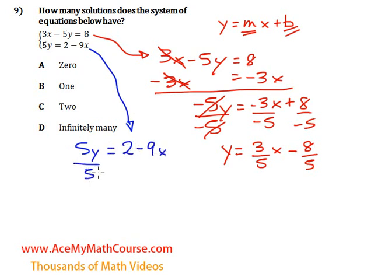So now we can just divide both sides by 5. So y equals, now I'll put the x actually in front of the 2 over 5. So we get negative 9 over 5x plus 2 over 5.